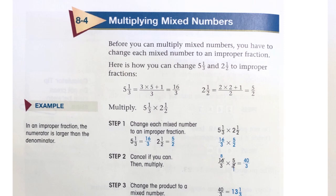Basic Math, Chapter 8, Section 4, Multiplying Mixed Numbers. Before you can multiply mixed numbers, you have to change each mixed number to an improper fraction. Here's how you can change 5 and 1/3 and 2 and a half to improper fractions.